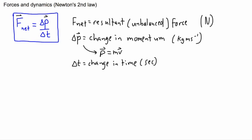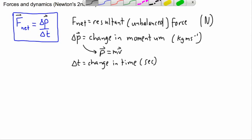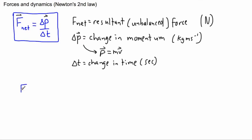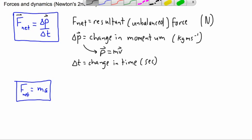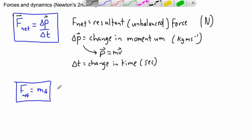Now the version that a lot of students have learned, instead of this version right here, a lot of students have actually learned F equals ma. This is a bit limited if you just write it like this. I'd like to say F net equals ma. First of all, F net is still your resultant or unbalanced force, that's still the same. But if we look at this then we could say m is the mass.